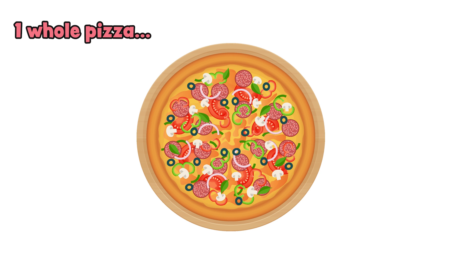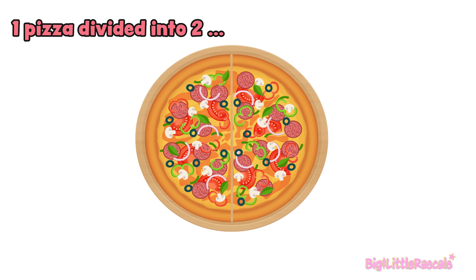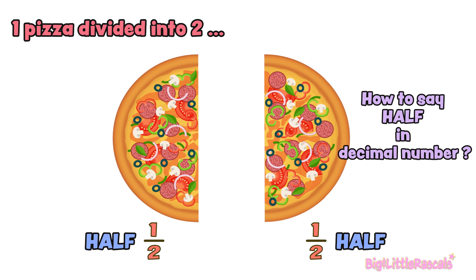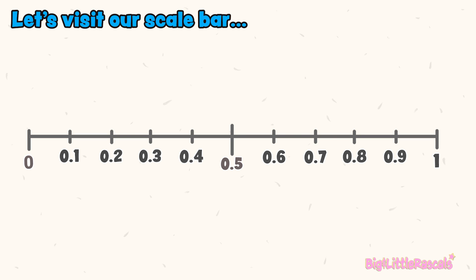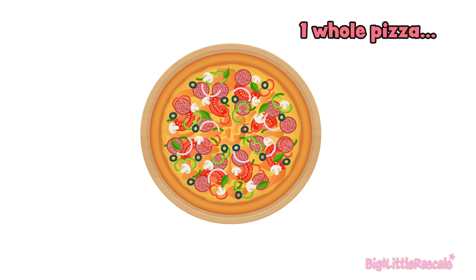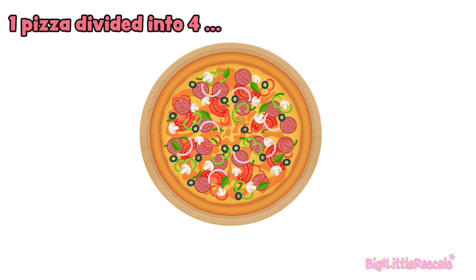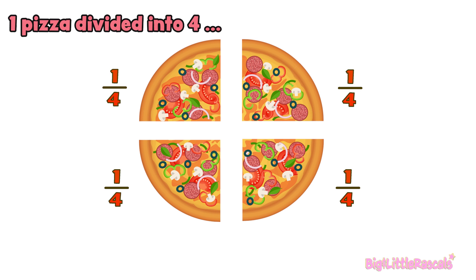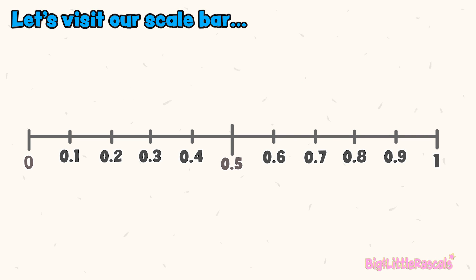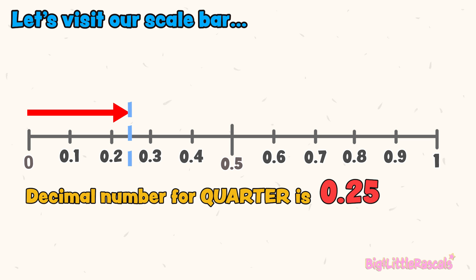Let's see this pizza. One whole pizza. One pizza divided into two gives us half — one divided by two. But how do you say this half in decimal number? Let's visit our scale bar. Let's find half. So in decimal number, half is 0.5. Now I'm dividing this pizza into four. How much in fraction? One whole pizza divided into four becomes a quarter. And how do you say this in decimal number? Let's zoom in. So in decimal number, a quarter is 0.25.